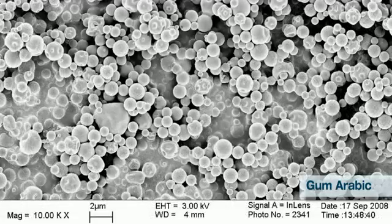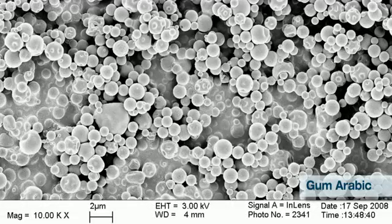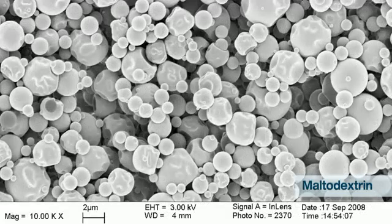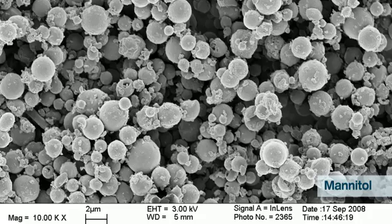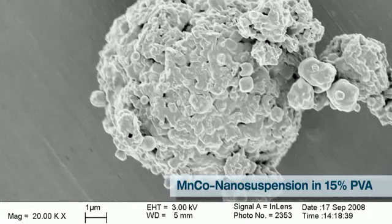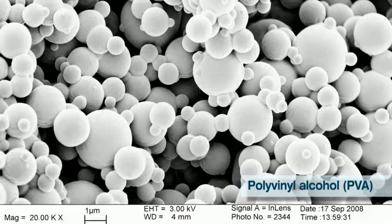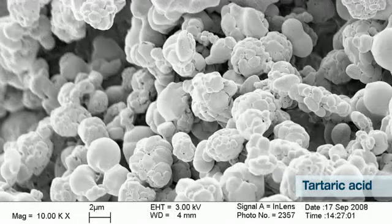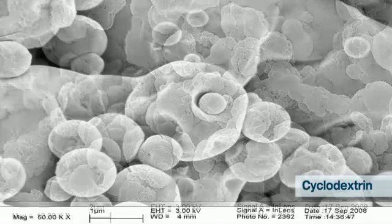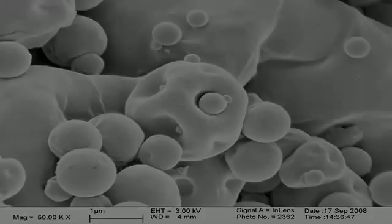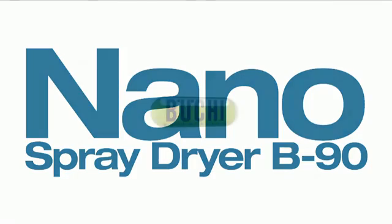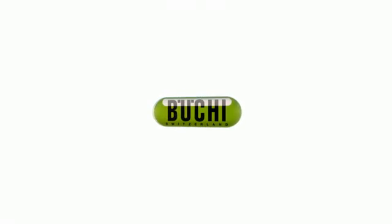The three unique technologies of the Nanospray Dryer B90 allow you to run an experiment with minimal investment of your sample, produce submicron or even nanoparticles with a narrow size distribution, profit from minimal product loss of your high valuable product, and save process time due to easy cleaning and assembling.